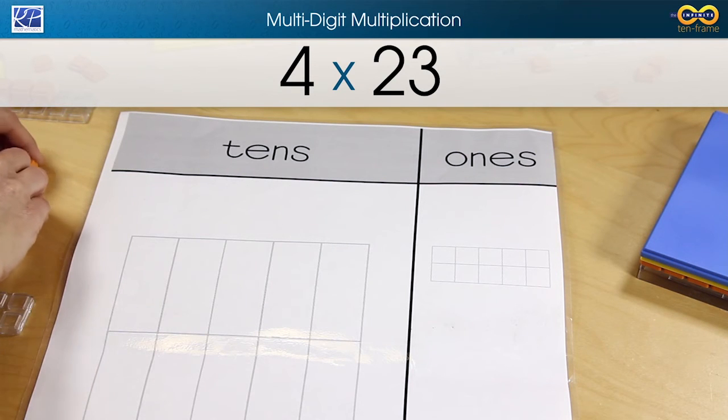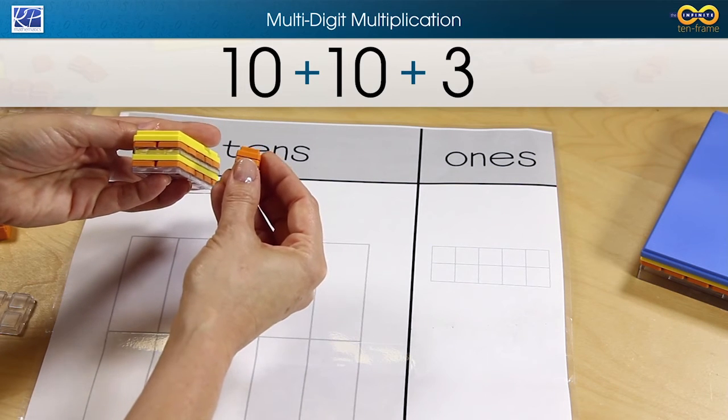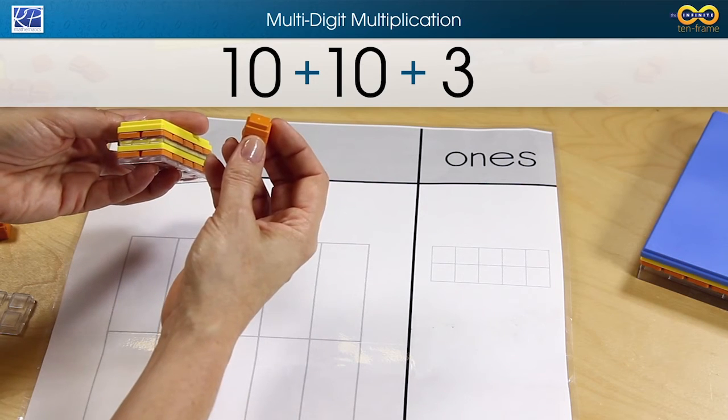So if we're going to multiply 4 times 23, this time we built 23 like this. So you have two groups of 10 and three ones.